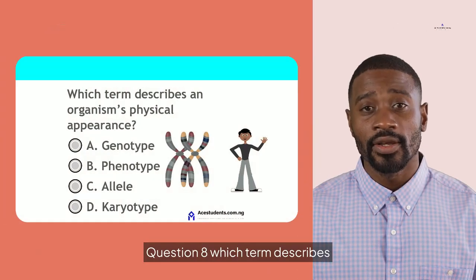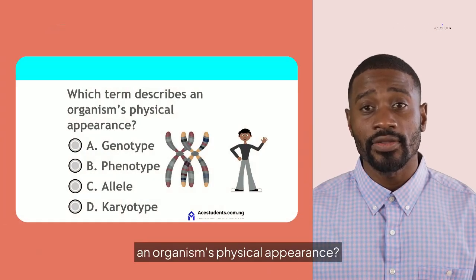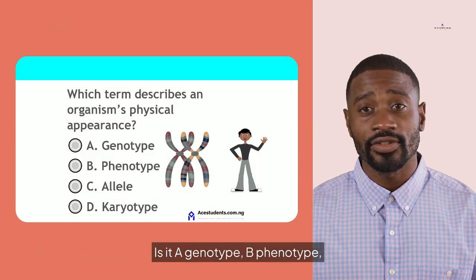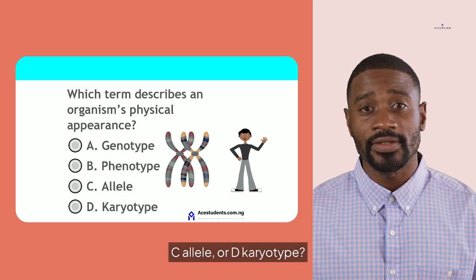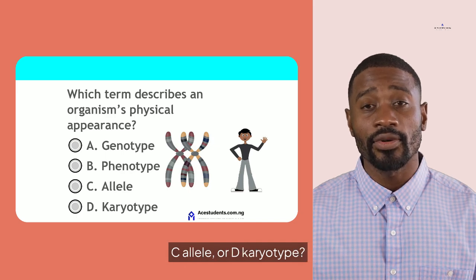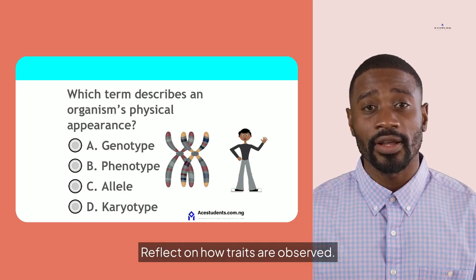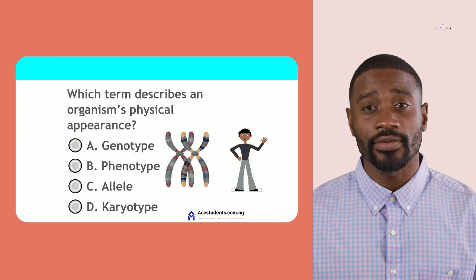Question 8. Which term describes an organism's physical appearance? Is it A. Genotype, B. Phenotype, C. Allele, or D. Karyotype? Reflect on how traits are observed.